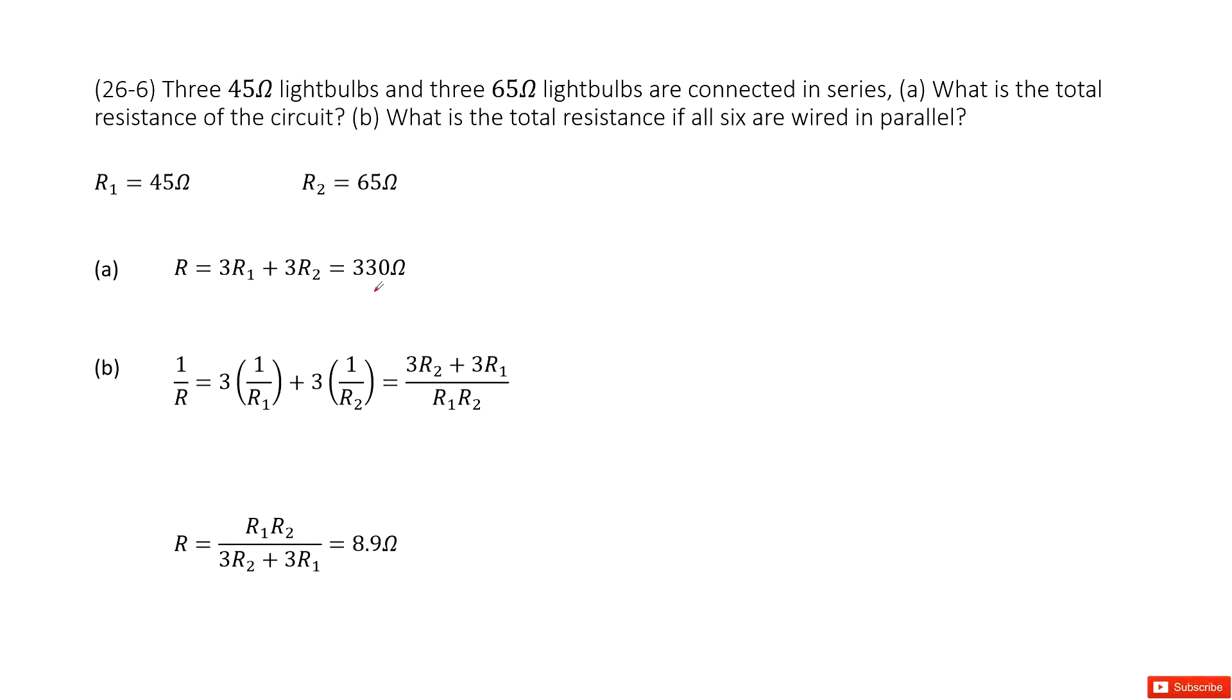The equivalent resistance formula is 1 over R equals three times 1 over R1 plus three times 1 over R2. For parallel connections, we add the reciprocals of the resistances together to get the equivalent resistance.